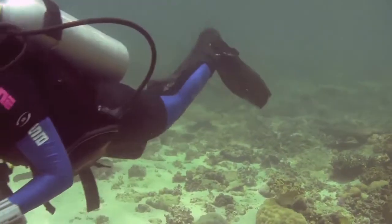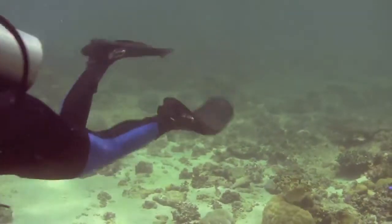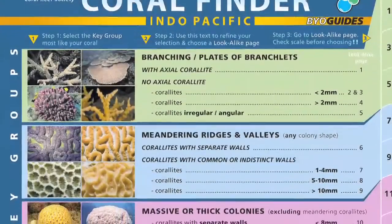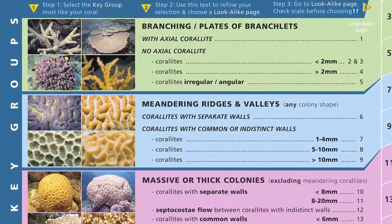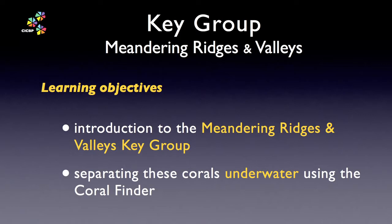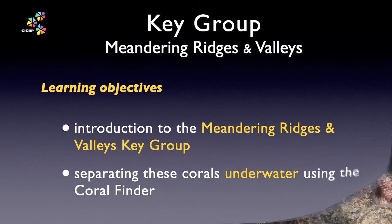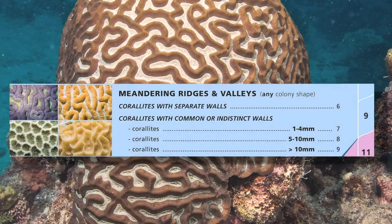Welcome to the fifth training movie in the Coral Finder Toolkit training movie series. In the previous movie we introduced the Coral Finder key groups using the branching key group as an example. In this movie we will demonstrate the meandering key group, focusing on some new terms and tips for how to work smart. The first thing to note about the meandering key group is that it focuses on the apparent surface texture of a coral colony.